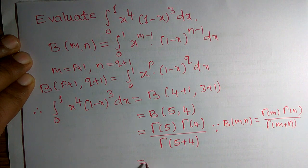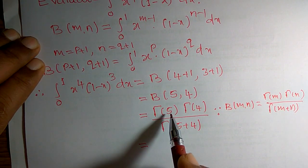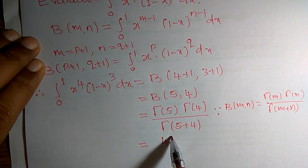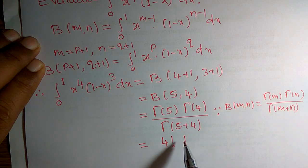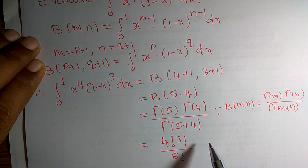This can be written as gamma of 5 means it can be written as 4 factorial. Similarly, gamma of 4 can be written as 3 factorial, divided by 5 plus 4, which is 9. Gamma of 9 can be written as 8 factorial.